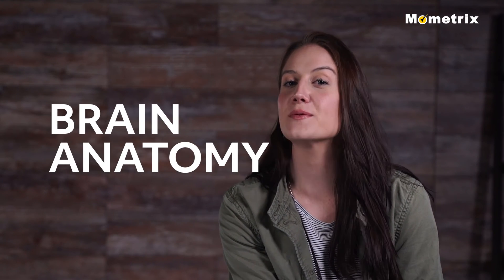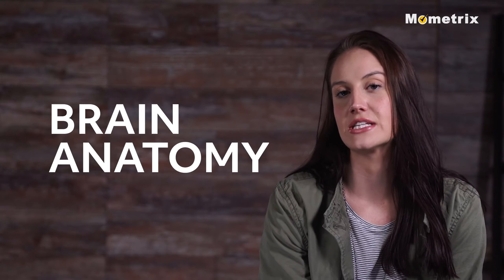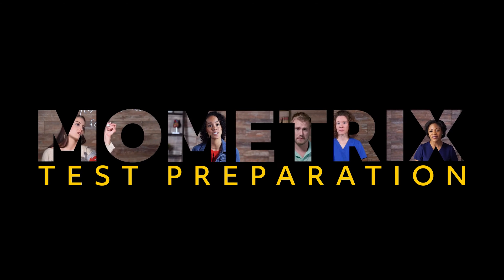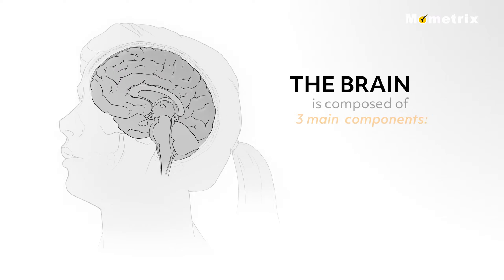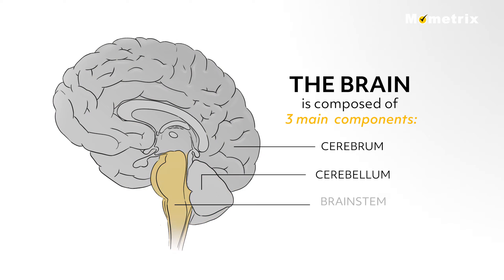In today's video, we're going to talk about the anatomy of the brain and the corresponding functions. The brain is composed of three main components: the cerebrum, the cerebellum, and the brainstem. Each have their own distinct features and functions that we will be discussing in this video.